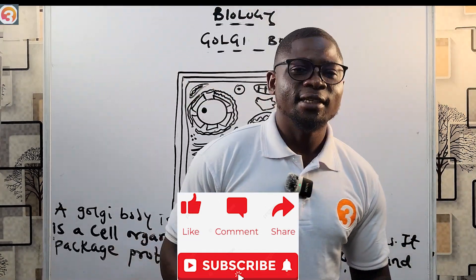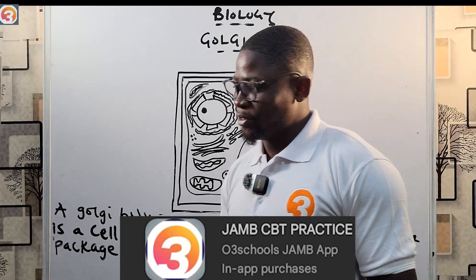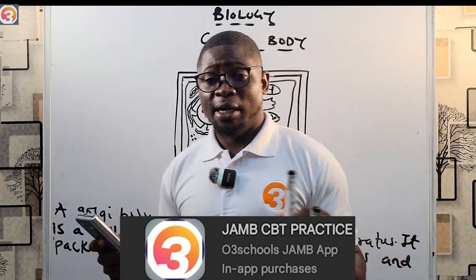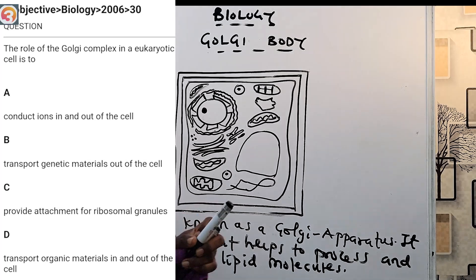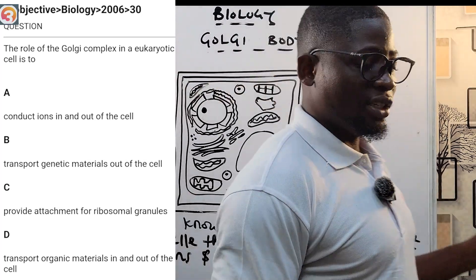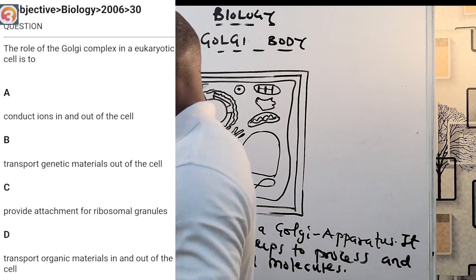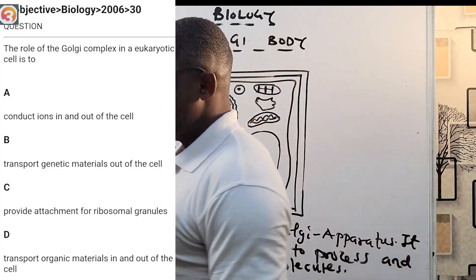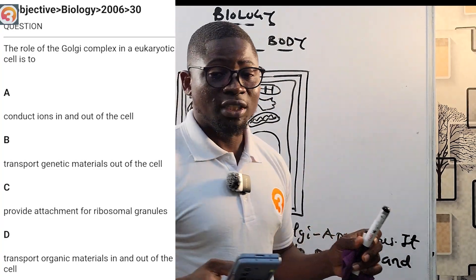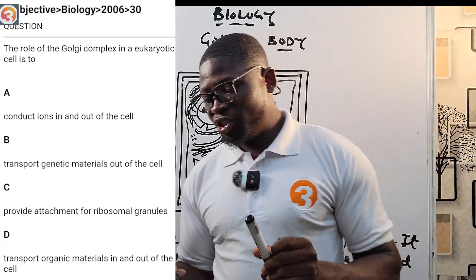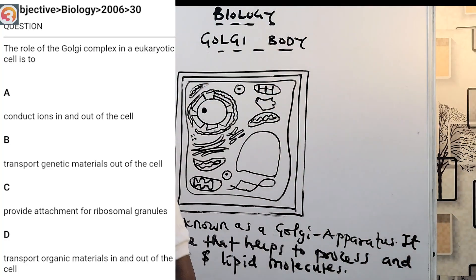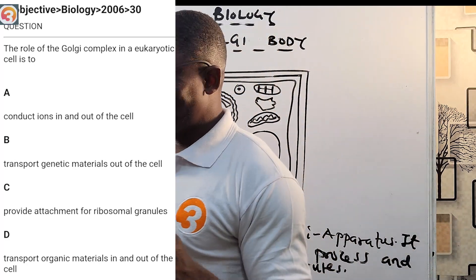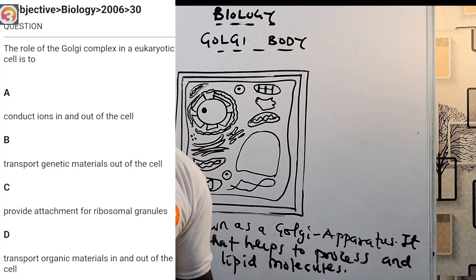This tutorial is brought to you by Otiris. Let's take a question from the app — this is Biology 2006, question number 30. The question asks: the role of the Golgi complex in the eukaryotic cell is to: A) conduct ions in and out of the cell, B) transport genetic materials out of the cell, C) provide attachment for ribosomal granules, D) transport organic materials in and out of the cell.